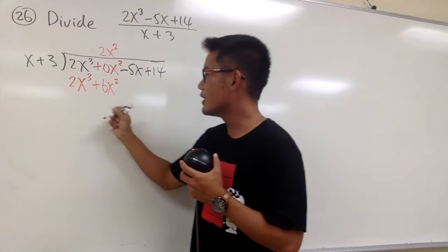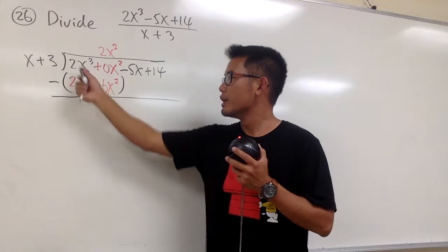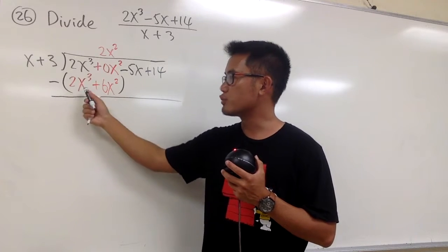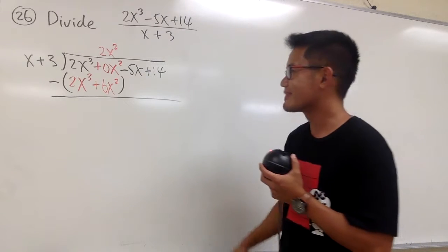And for long division, we will be subtracting this, right? And now, you see that 2x to the third power minus 2x to the third power is 0. The first term should always be cancelled out, right?